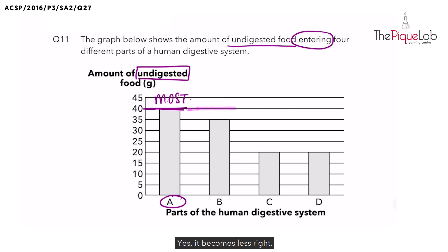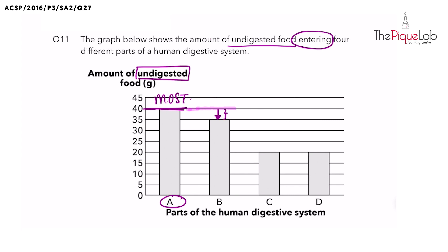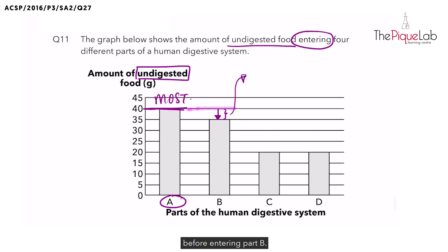Now what do you think would have happened to this amount of undigested food before entering B? Yes, the undigested food must have been broken down into simpler substances and become digested food. So let's write down: this amount over here has been digested before entering part B.